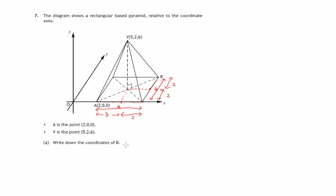So we've now solved the first part of this problem — writing down the coordinates of B. The X coordinate: going from the origin to point A is 2 units, followed by another 6 units, that's 8. Travelling along the Y axis, 4 units to get to B. And since point B lies on the XY plane — the base of the pyramid — the Z coordinate is 0. So B is at (8, 4, 0).